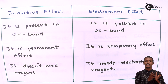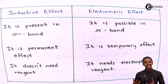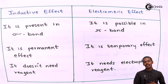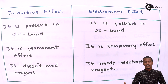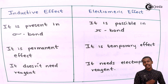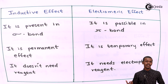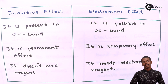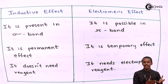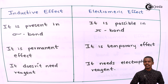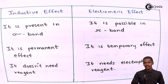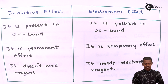Another key difference: the inductive effect is a permanent effect, because it deals with the electronegative atom attached or present in the molecule, causing polarity to arise permanently. The electromeric effect, on the other hand, is a temporary effect — the molecule already has a multiple bond, but the shifting of the pi bond to a particular atom only occurs upon the approach of an electrophile, making it temporary.